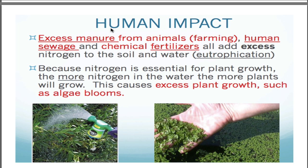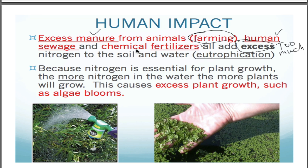You might be thinking: if nitrogen is a good thing and everything needs nitrogen, can humans impact the nitrogen cycle? Absolutely — just like with the water cycle. Here's where the problem occurs: excess manure from farming, human sewage, and chemical fertilizers all create excess — too much — nitrogen. When we have too much nitrogen in the soil or in the water, we call that eutrophication: adding excess nitrogen to the soil and to the water.